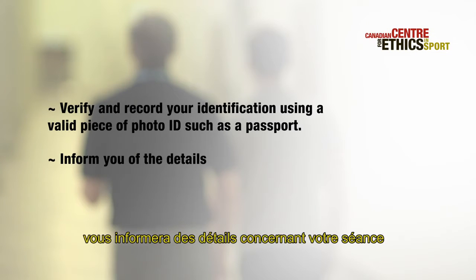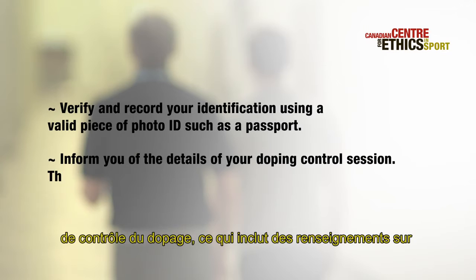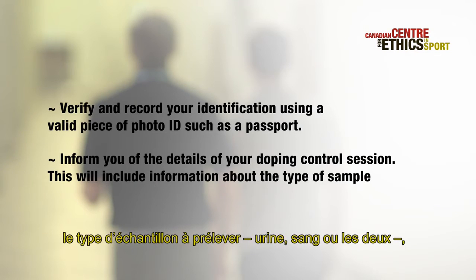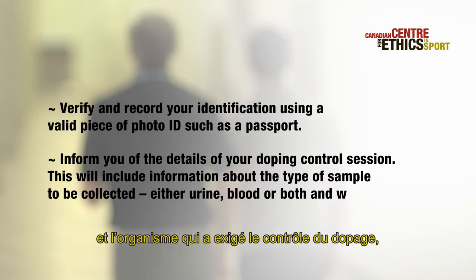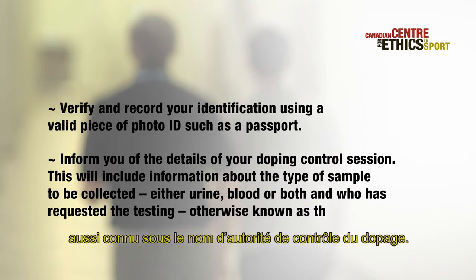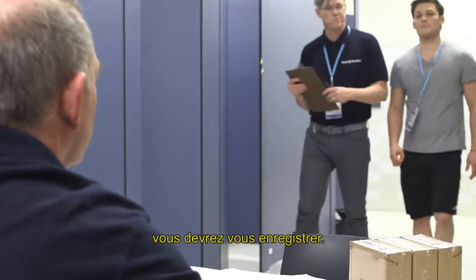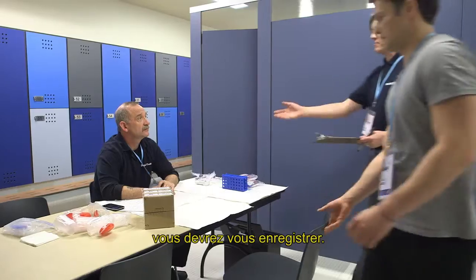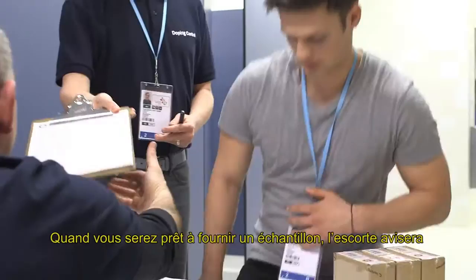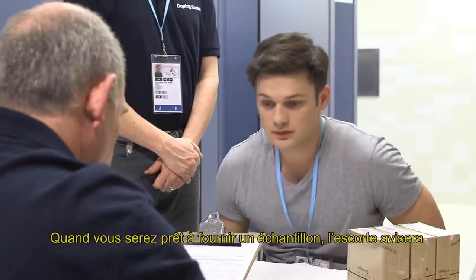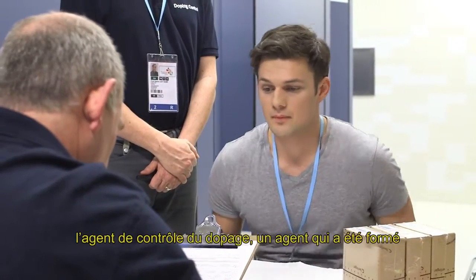The chaperone will inform you of the details of your doping control session, including the type of sample to be collected — either urine, blood, or both — and who has requested the testing, otherwise known as the test authority. Upon arrival at the doping control station, you will be asked to sign in. When you are ready to provide a sample, the chaperone will inform the DCO.